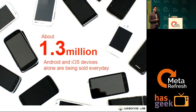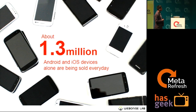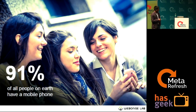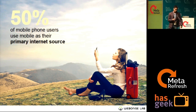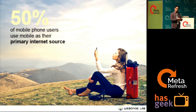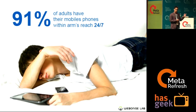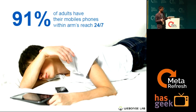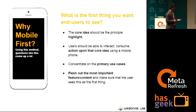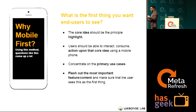1.3 million Android and iOS devices alone are sold every day — not counting BlackBerry or Nokia. 91% of people on earth have a mobile phone. 50% of mobile phone users use mobile as their primary internet source. This reflects a common behavior: we keep our mobiles and tablets within reach 24/7, constantly checking mail, Facebook, Twitter. Users want everything fast and handy.